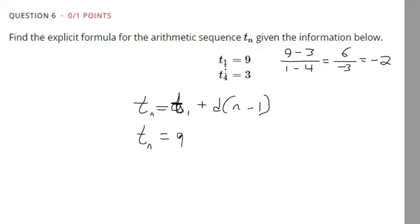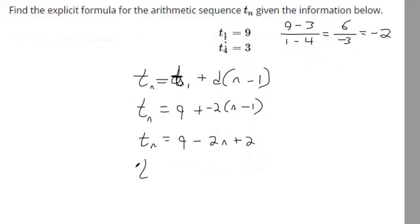So it's always the first term here plus the common difference, and then it's n minus 1. And then we could simplify a little bit. I'm not sure what Newton wants, so I always simplify. Distribute the negative 2, so that's minus 2n, and negative 2 times negative 1 makes a positive 2. And then combine like terms. 9 plus 2 makes 11.